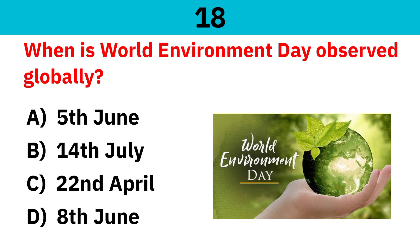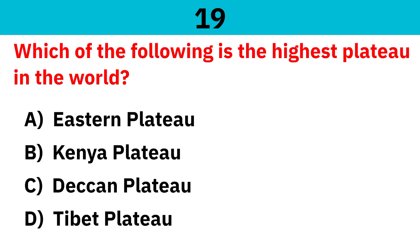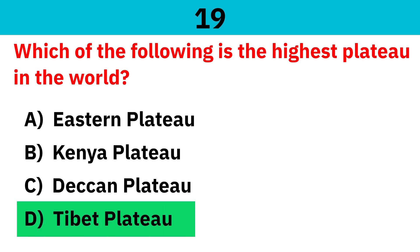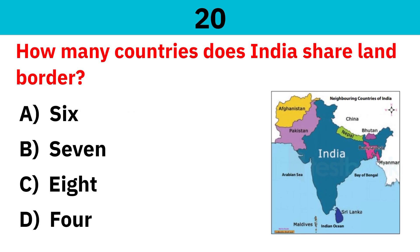When is World Environment Day observed globally? Correct answer is 5th June. Which of the following is the highest plateau in the world? Correct answer is the Tibet Plateau. How many countries does India share a land border with? Correct answer is 7.